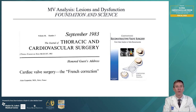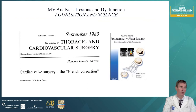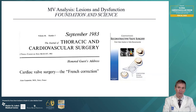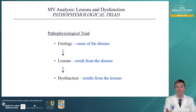It all began in 1983 when Dr. Alain Carpentier was honored guest speaker at the American Association for Thoracic Surgery, when he presented the French correction — a whole new way to address mitral valve disease. Many of the images I'm showing will be from his most recent summary of reconstructive techniques. We start with the pathophysiological triad that involves the etiology, which is the cause of the disease; the lesions, which are what results from the disease; and dysfunction, which is what results from the lesions.